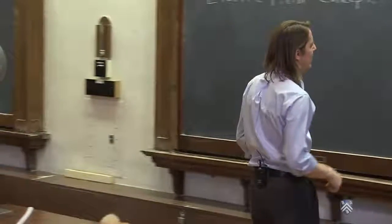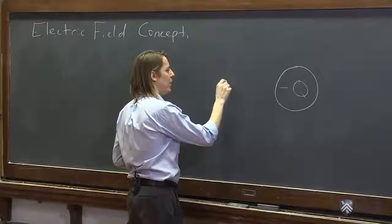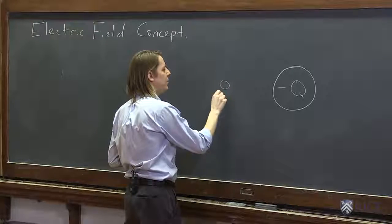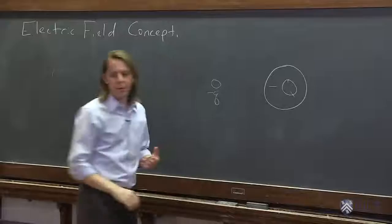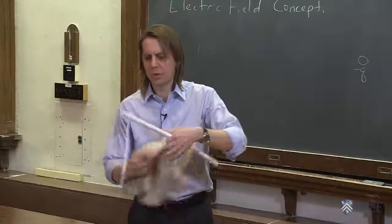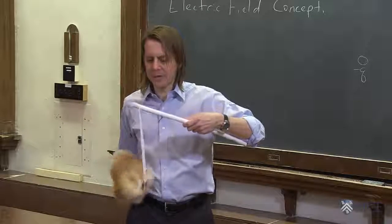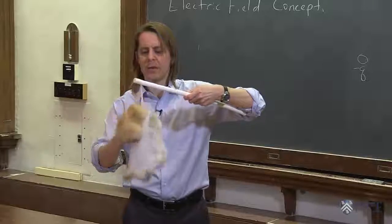So now, the next thing we want to think about is another little charge that would feel the force. So often we'll draw that as a smaller, we might call it a test charge. In this case, we'll also make it negative, because to show you that one, we're going to use the Teflon tape and the fur. All right, so I take my little charge probe here. It's just a piece of Teflon tape hanging off of a Teflon rod, charge up the fur. It's now nice and negative.